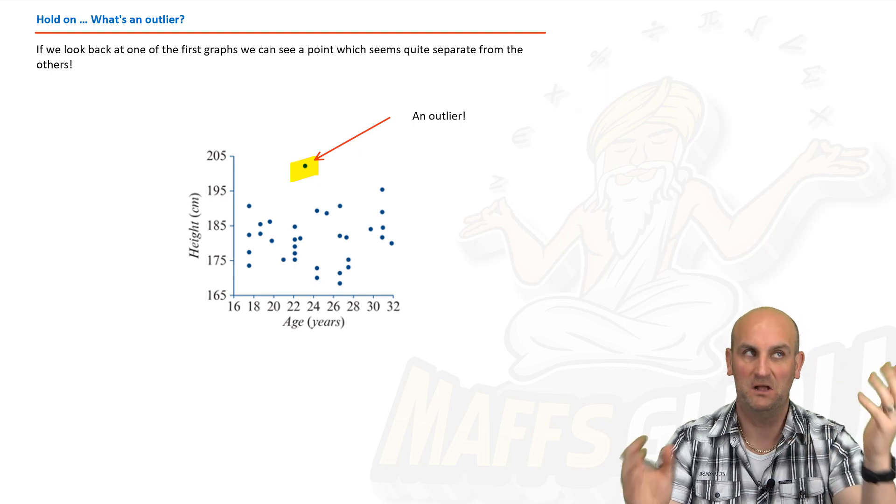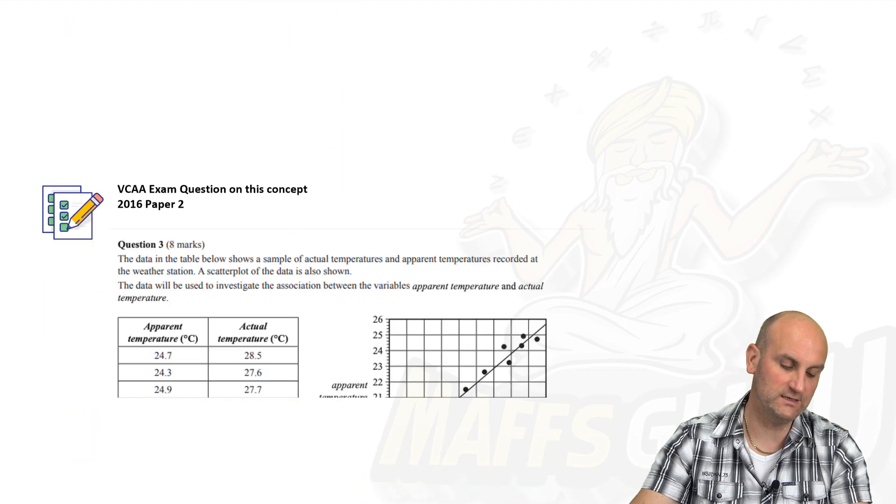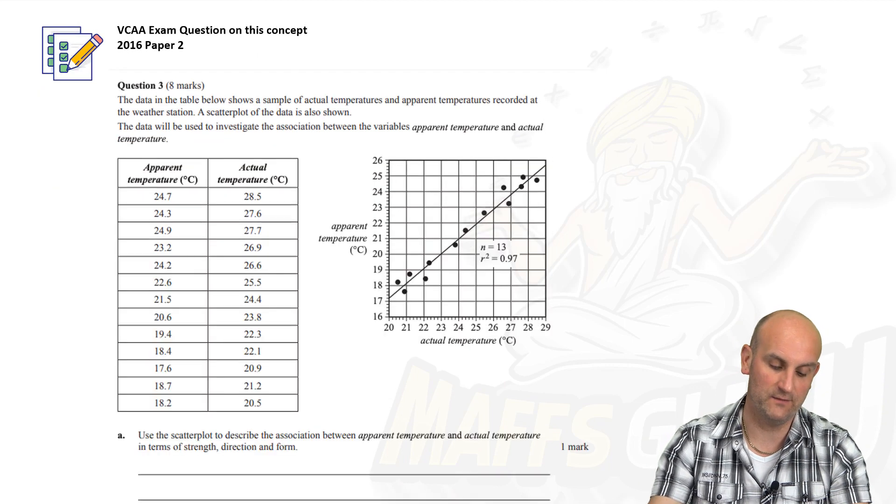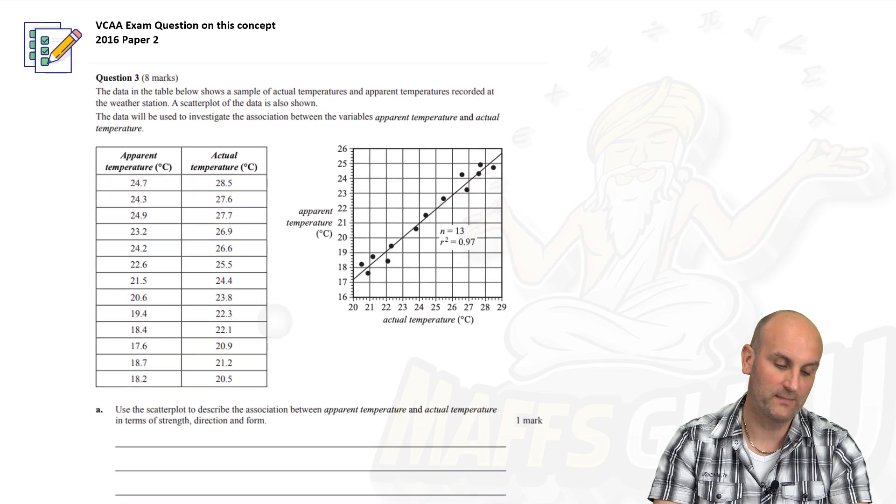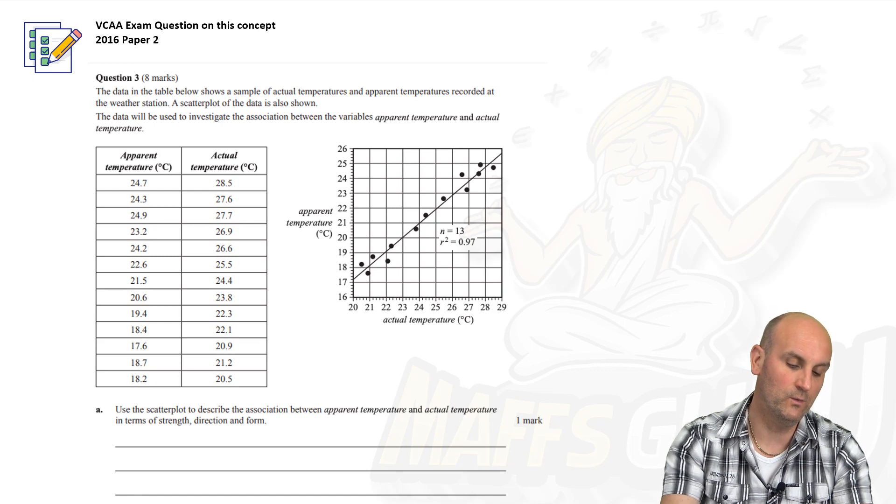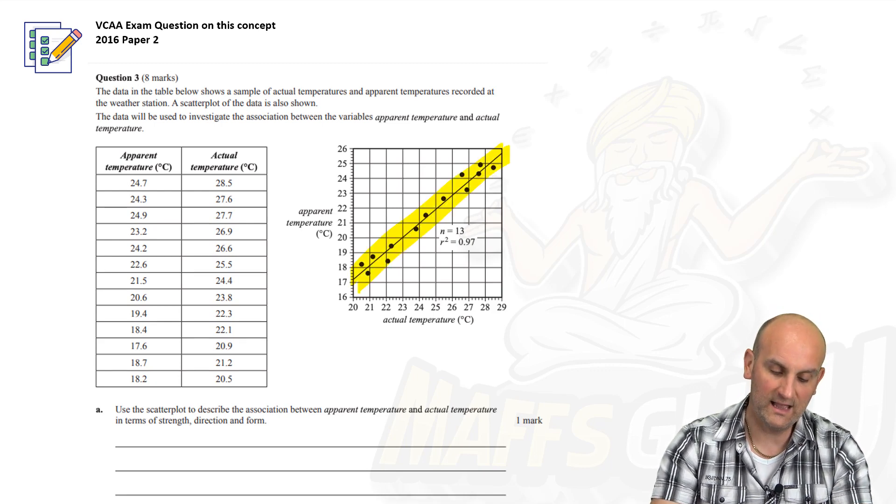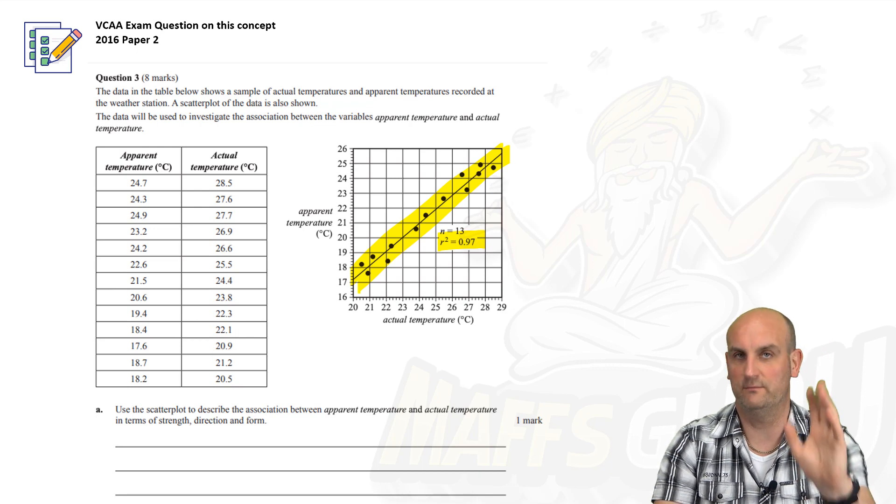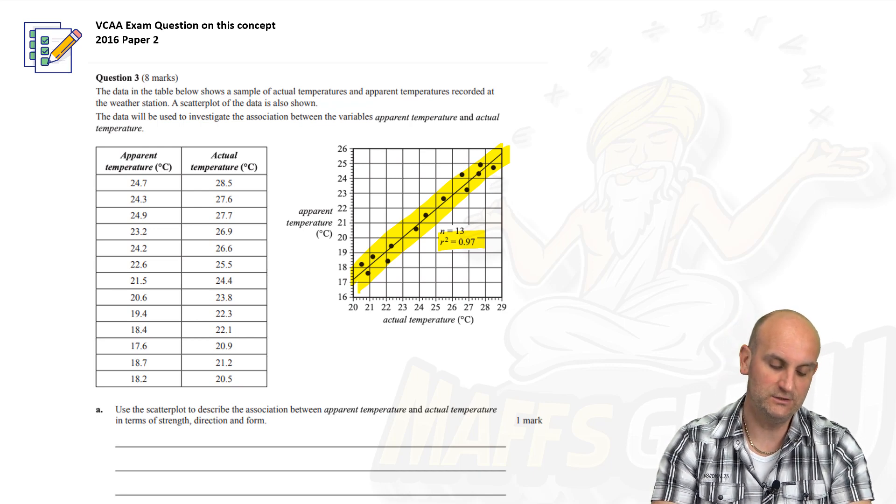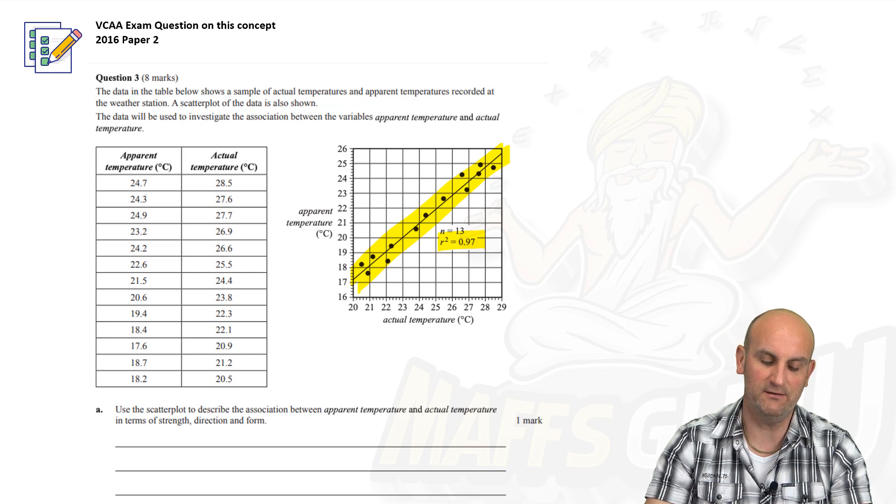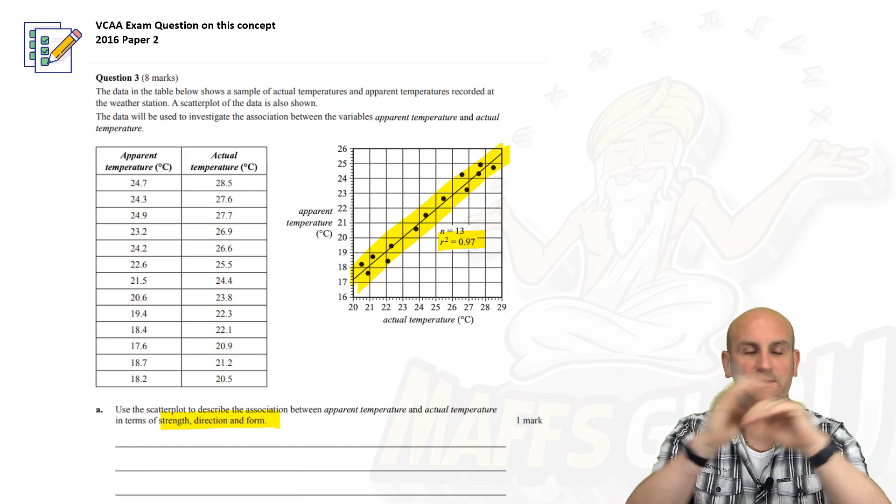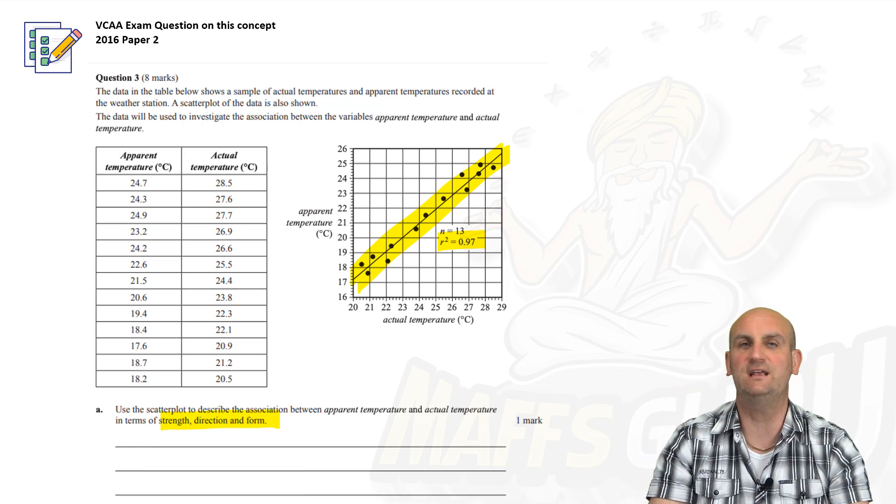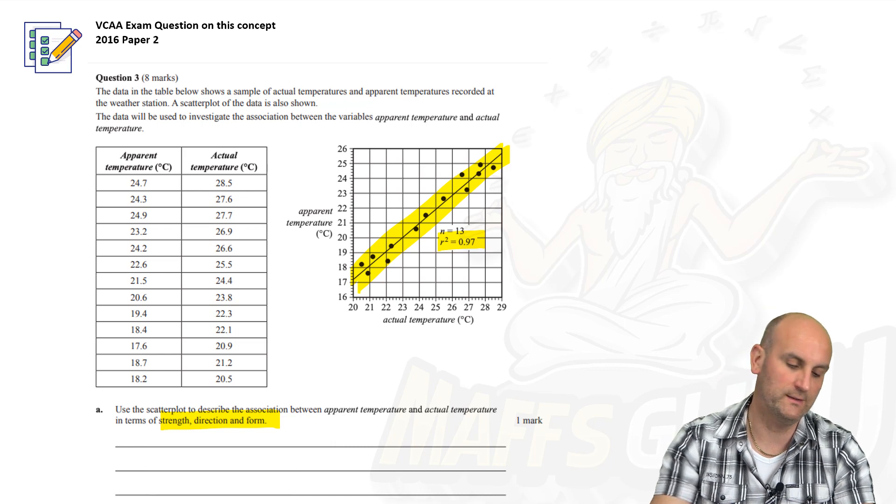Now, there is a VCAR question here that basically used this type of information, or this type of theory. And so, let's centre it slightly better. The data in the table shows a sample of actual temperatures and apparent temperatures recorded. What can you notice? Well, we've got a scatter plot here. We have an R squared value. That comes in a little bit of a later lesson. And it says, use the scatter plot to describe the association between apparent temperature and actual temperature in terms of strength, direction of form. As far as I'm concerned, that is just flashing lights. Open my summary book and start to talk about it.